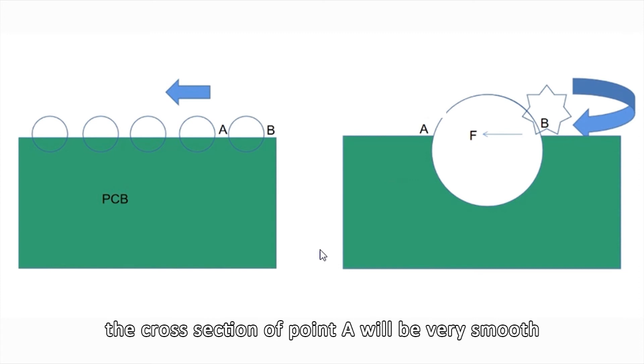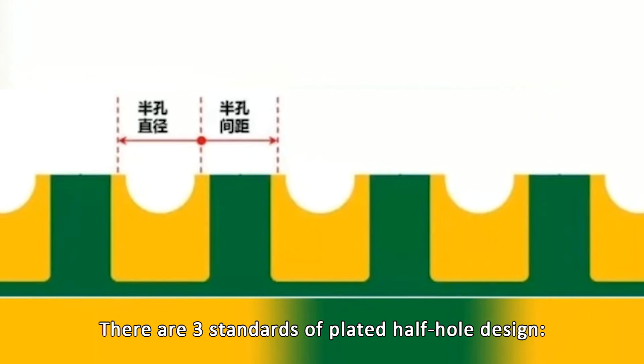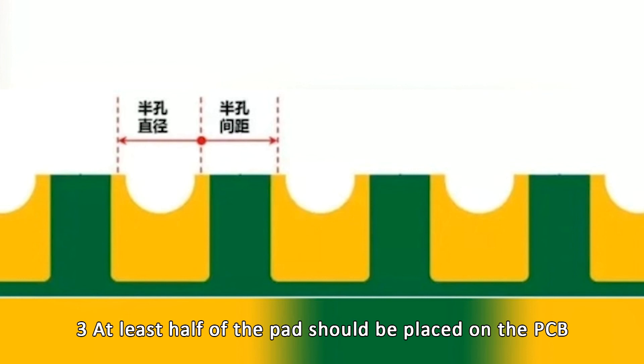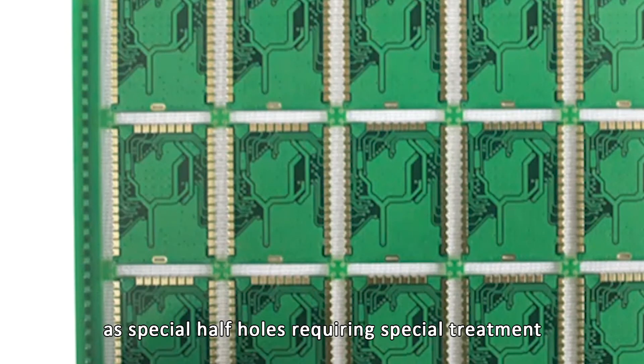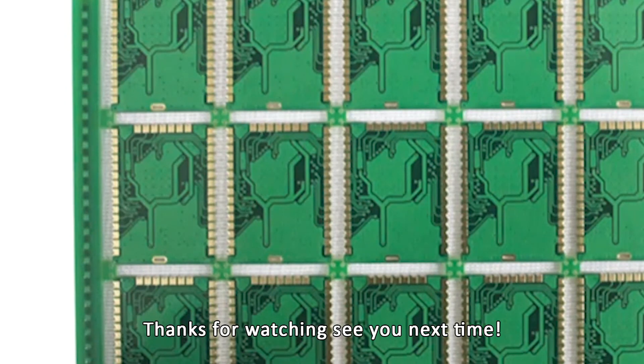There are three standards for plated half-hole design: hole size greater than or equal to 0.4 mm, spacing greater than or equal to 0.5 mm, and at least half of the pad should be placed on the PCB. If these exceed the above sizes, they should be classified as special half-holes requiring special treatment.